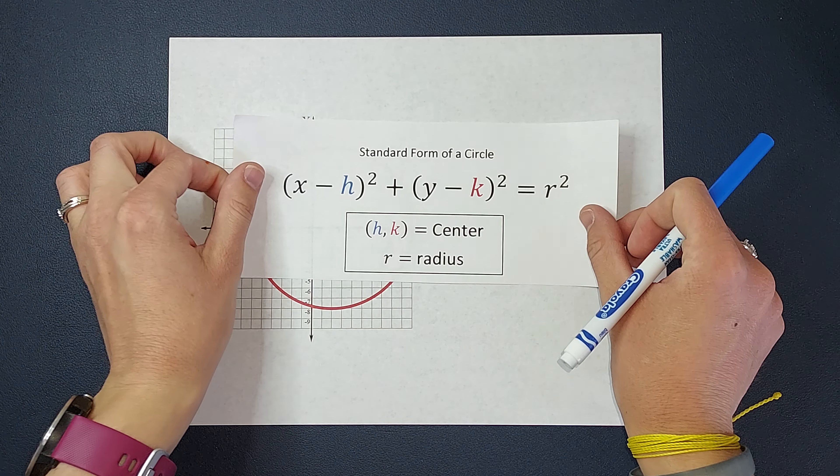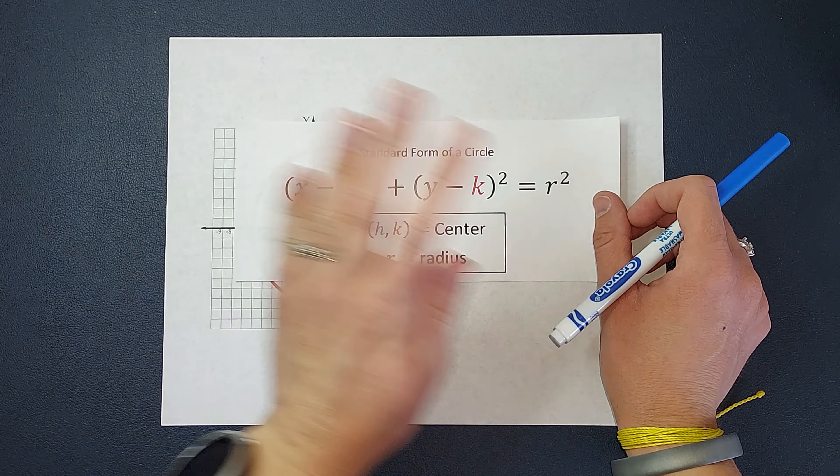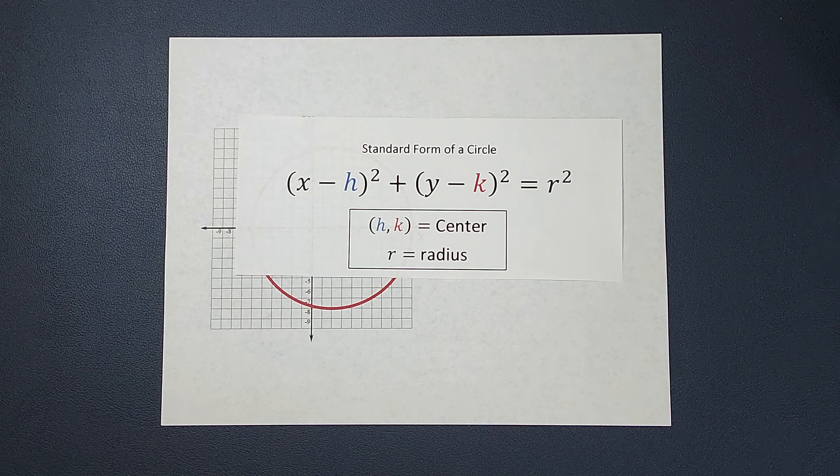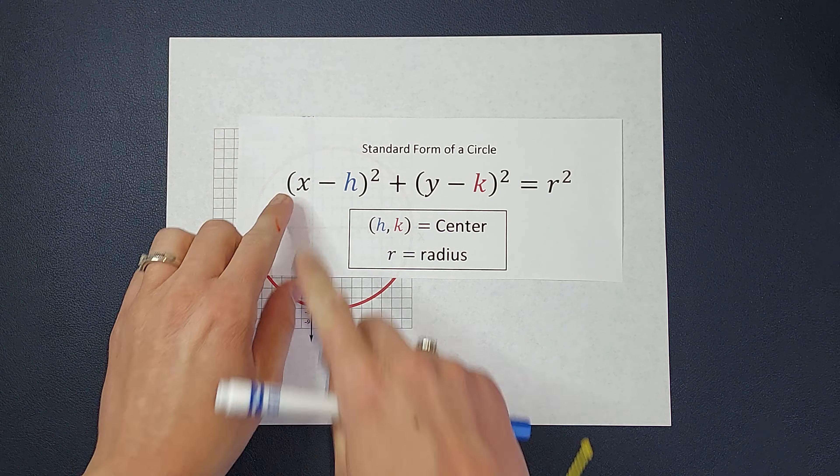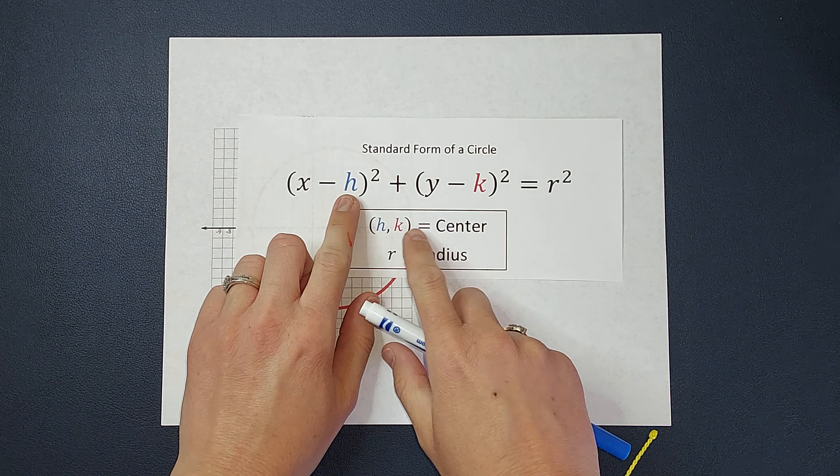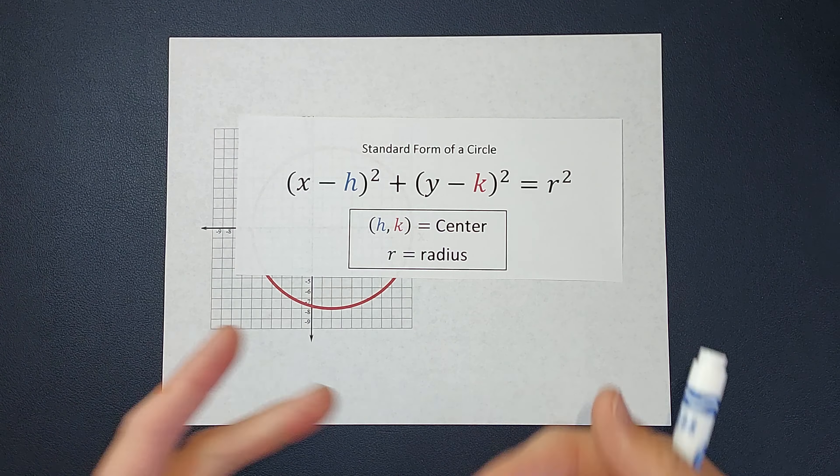So here is my magic key to all of this. This is the standard form of a circle. So when I write this as an equation, the x and y are going to stay as x and y, and we need to figure out what numbers we fill in for h, k, and r.